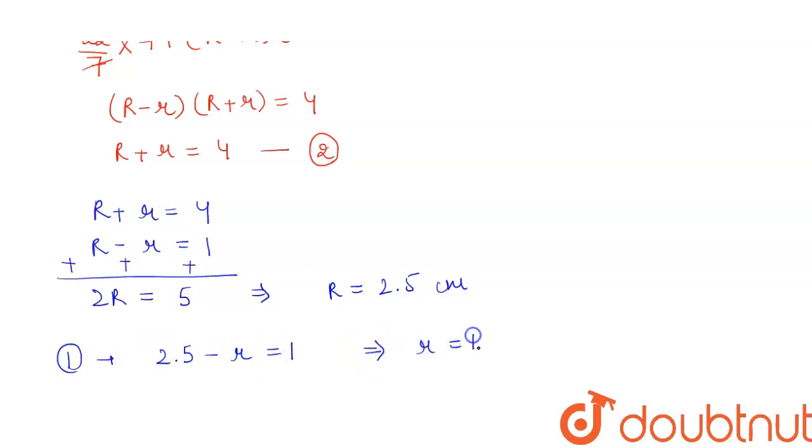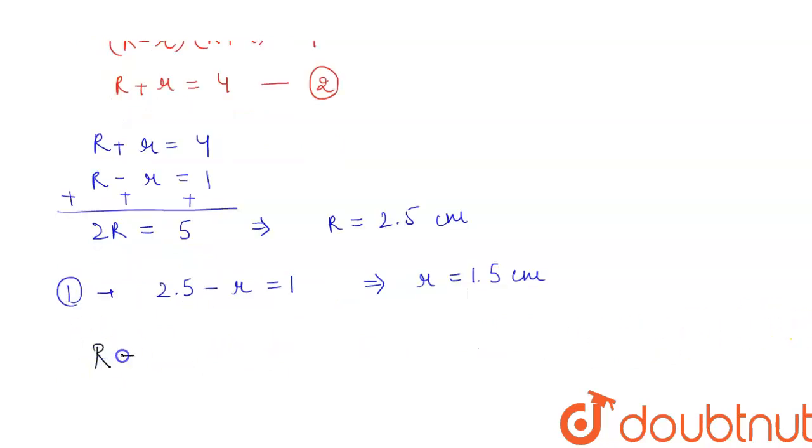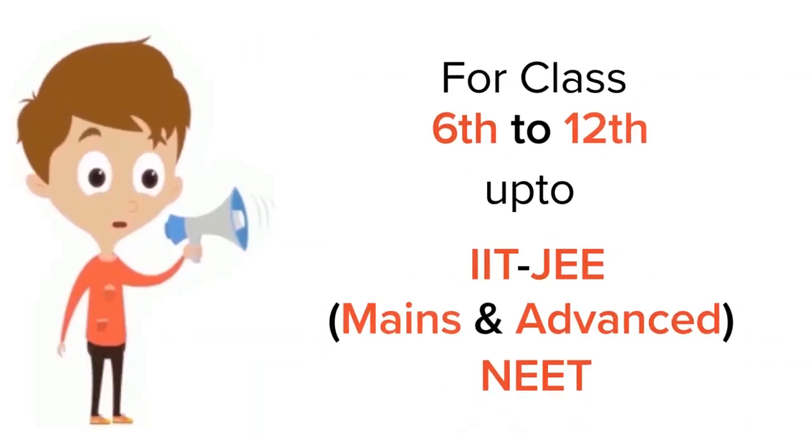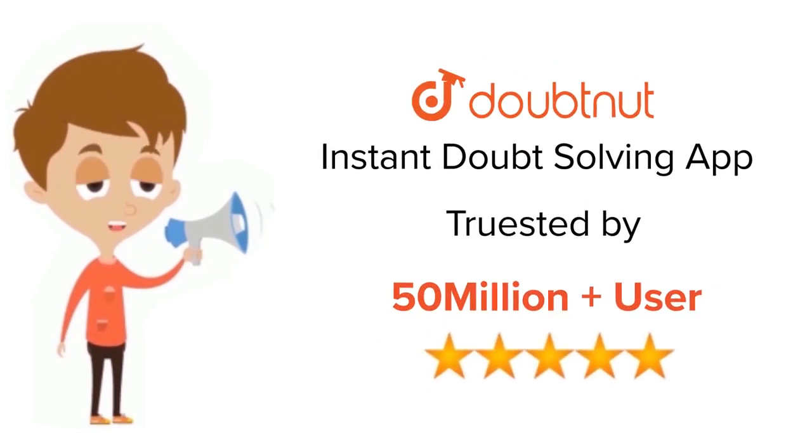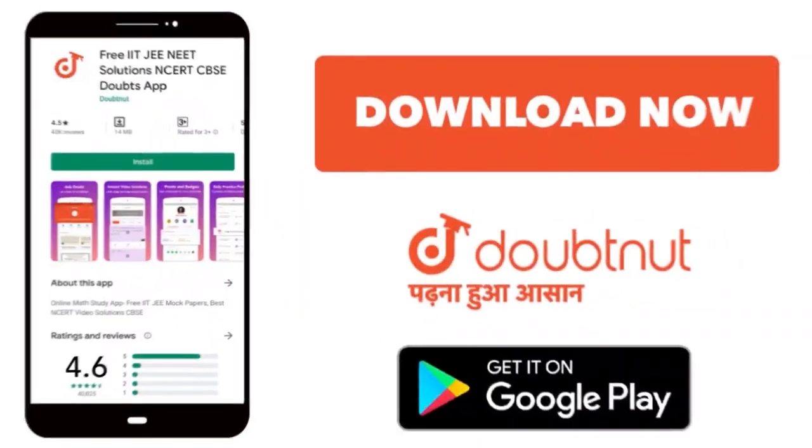And this gives us the value of small r to be 1.5 centimeters. So our capital R comes out to be 2.5 centimeters and small r comes out to be 1.5 centimeters, and this is our required answer. For class 6 to 12, IIT JEE and NEET level, trusted by more than 5 crore students, download Doubtnut app today.